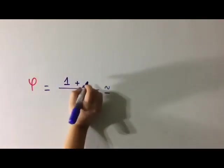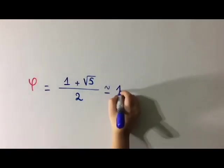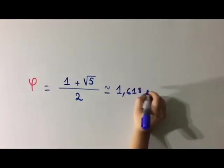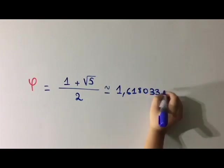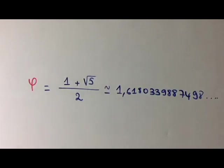Phi is equal to 1 plus square root of 5 divided by 2, which is approximately equal to 1.618033398874989, etc. But we can say that it is equal to 1.618.